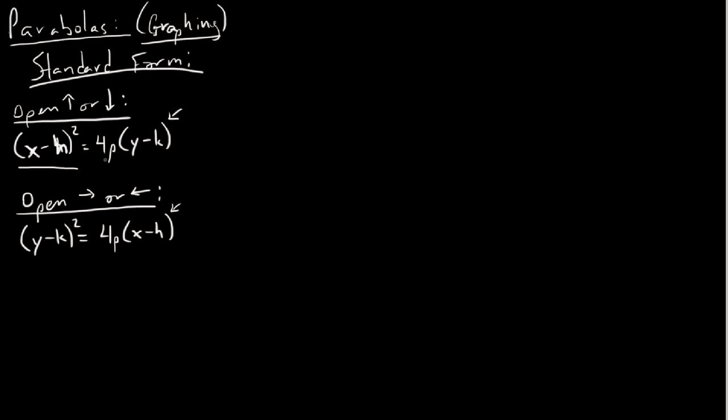And last but not least, you'll notice here that we have this quantity out front, this coefficient of x minus h and y minus k on the right. But the fact of the matter is that we see that this is 4p in both instances. And p, if you watched the last video, you'll know is the directed distance from the focus of a parabola to its vertex.